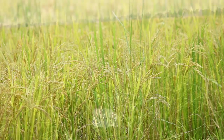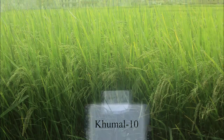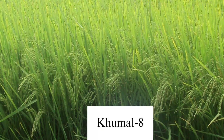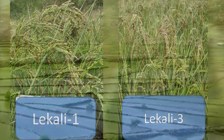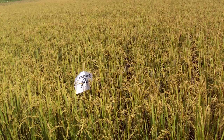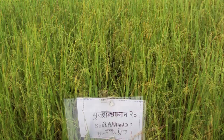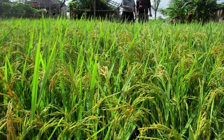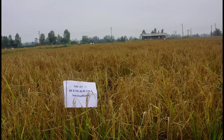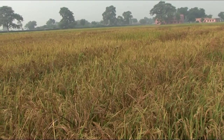Some examples are Sugandit Dhan 1, Radha 14, Kumal 10, Kumal 4, Kumal 8, Hardinath 1, Lekali Dhan 1 and 3, Chandan Nath 3, Ram Dhan, Sabitri and Sawa Masuri Sub 1, Sukadhan 1, Sukadhan 2, Sukadhan 3, Sukadhan 4, Sukadhan 5 and Sukadhan 6, and many more which are grown in different climatic conditions.